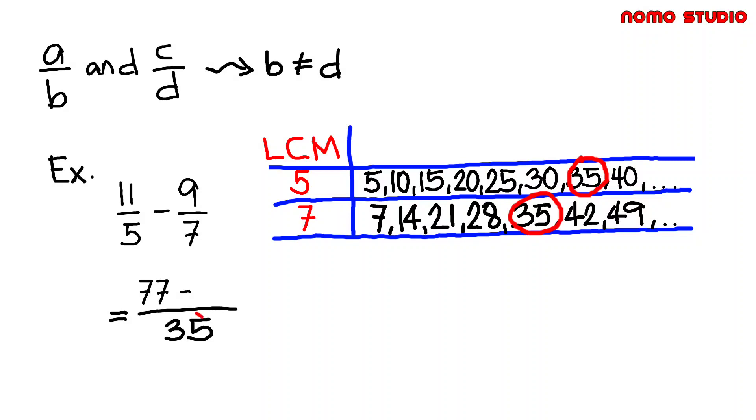Also, 35 divided by 7 is 5, then times 9, and that is equal to 45. 77 minus 45 is 32. So we have 32 over 35. Remember to reduce answers in lowest term.